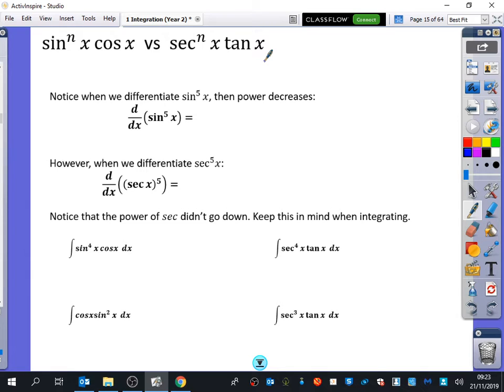They're really no different to what we've done before. So look, when we differentiate sine to the power of 5x, the power decreases. So if we're going to differentiate sine to the power of 5x, if I rewrite it in the form that we're usually comfortable with, what would that differentiate to?